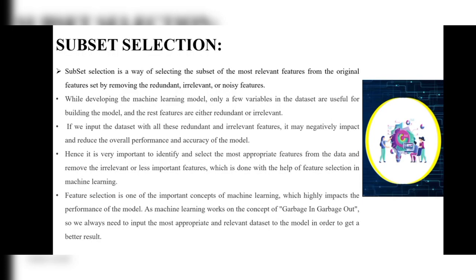Today we are going to start our new topic: subset selection in predictive analytics. In the previous videos we learned about linear regression and multiple regression. In multiple regression we get a lot of outputs, so from those outputs, how do we select the required output? For that we use subset selection. Subset selection is a way of selecting the subset of the most relevant features from the original feature set by removing the redundant, irrelevant, and noisy features.